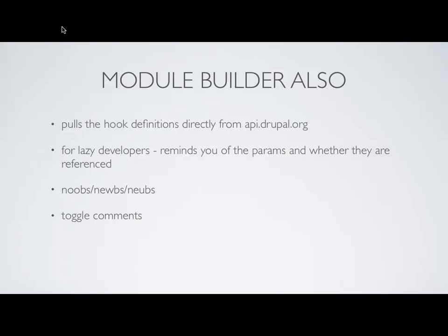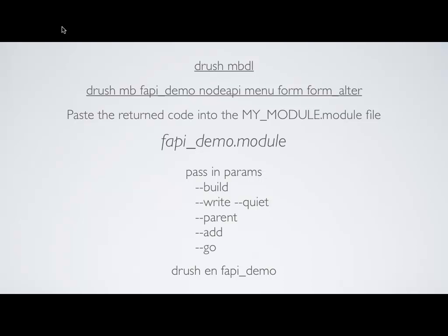Module Builder also comes with Drush hooks, so if you like working on the command line, you can just pass in parameters including a write parameter and it'll actually write the module to your folder. The Drush command `drush mbdl` will go to api.drupal.org, grab the hooks, and download them into your files directory so Module Builder can reference them.